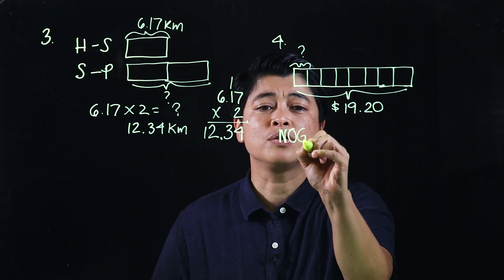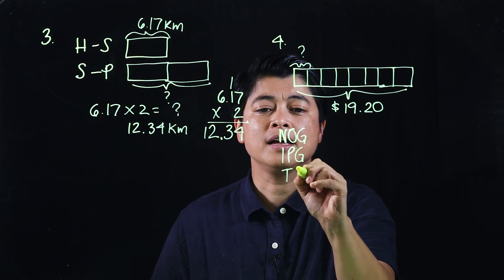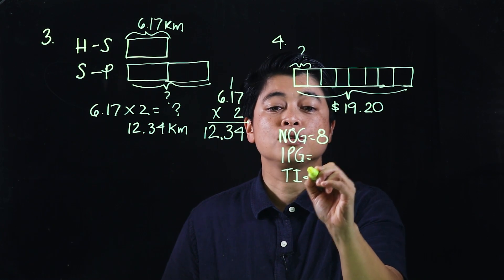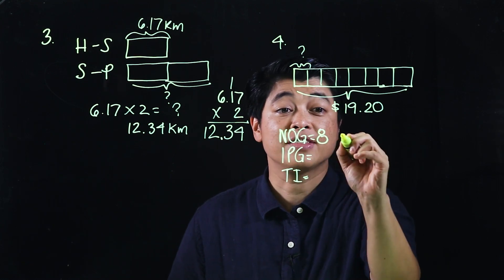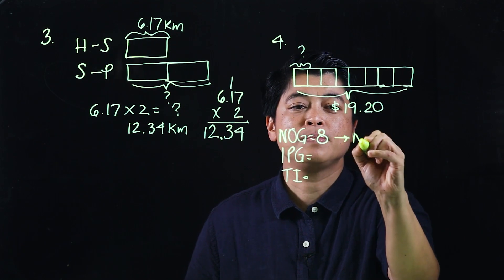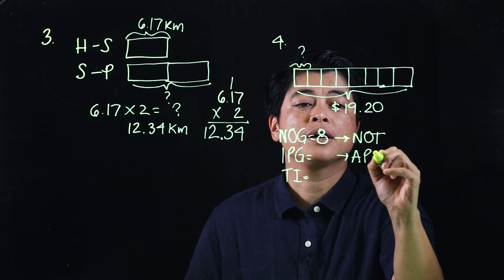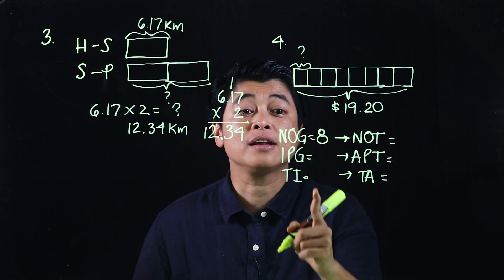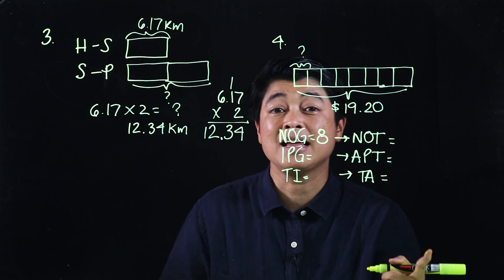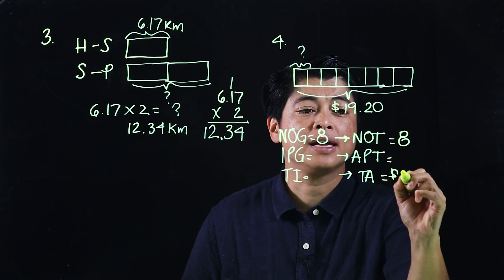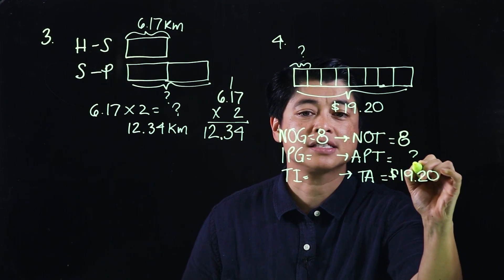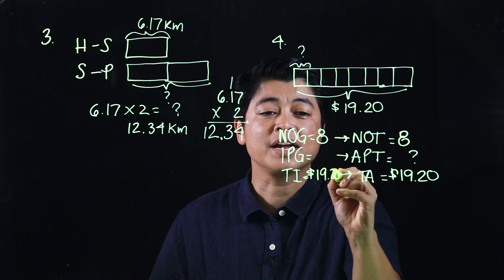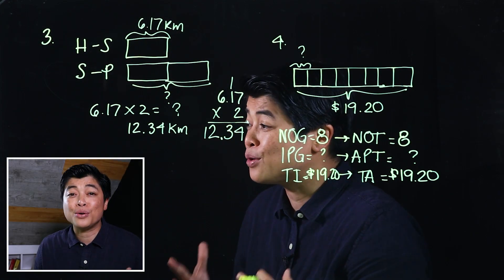If we don't want to do the bar model, we can also approach this as number of groups, items per group, and total items. The number of groups is 8. Since it's money, this should be number of things, amount per thing, and total amount. If the kids can continue filling this out, they don't need to change because it's the same. This would be 8, this would be 19 dollars and 20 cents, and that's the question mark. Whether they use those three or these three, it's the same operations, so please do not be so hard on your kids.